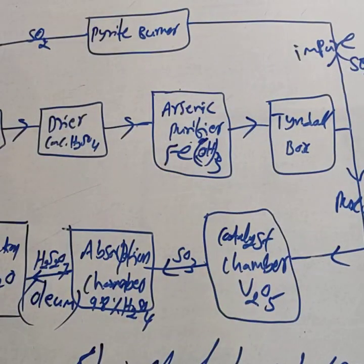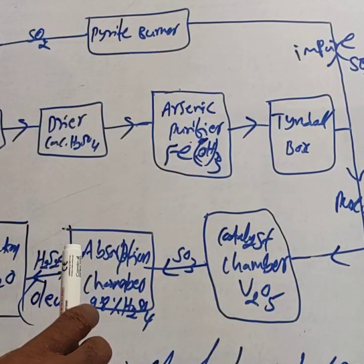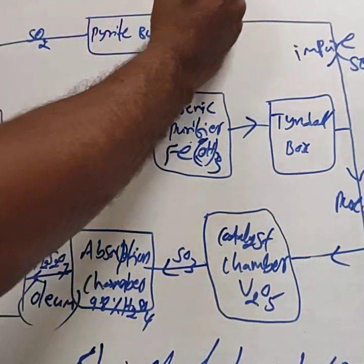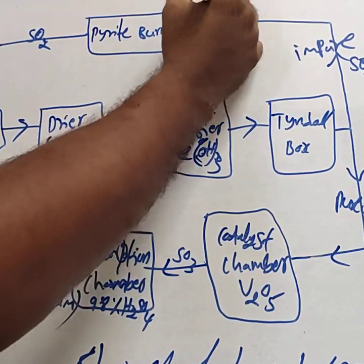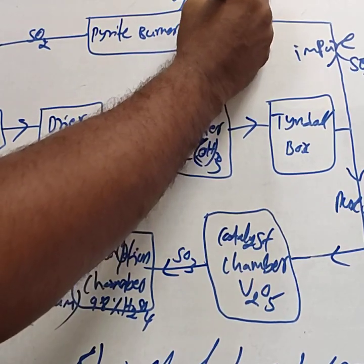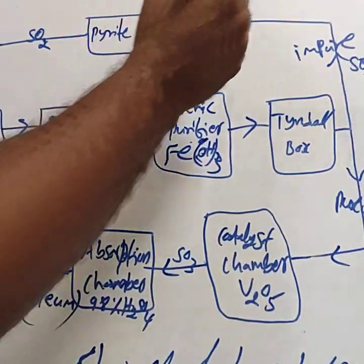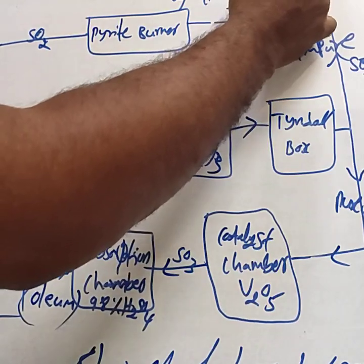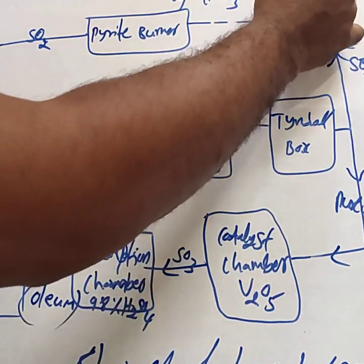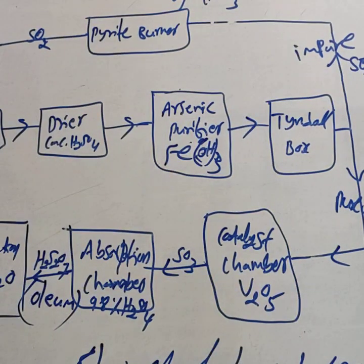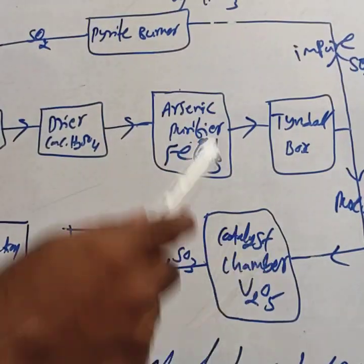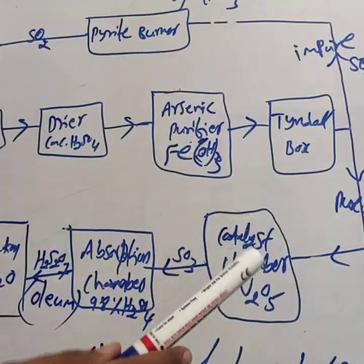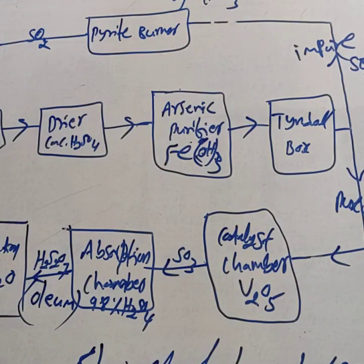This flowchart carries three marks. Among these three preparations — ammonia by Haber process, nitric acid by Ostwald's process, and sulfuric acid by contact process — definitely one question will be considered in your annual examination. Practice all three preparations.